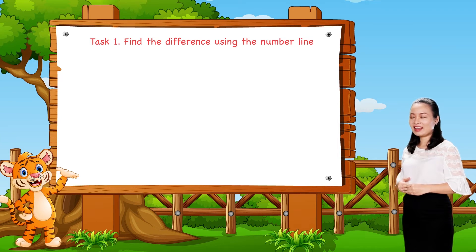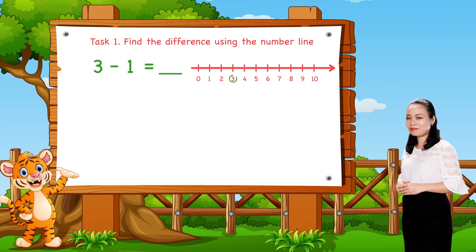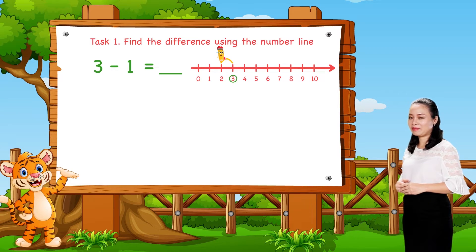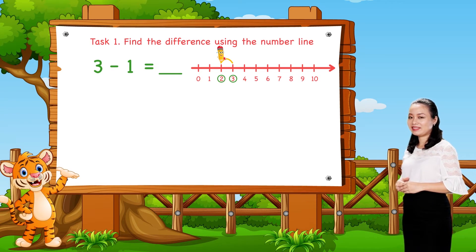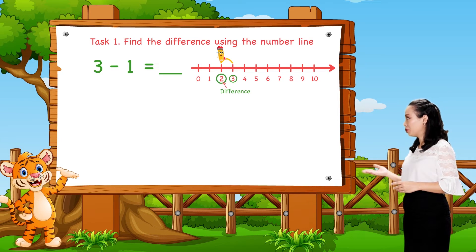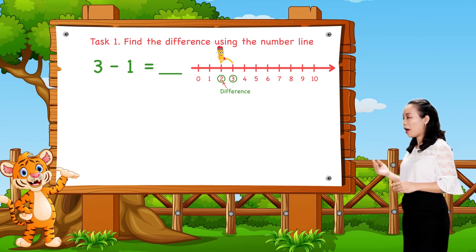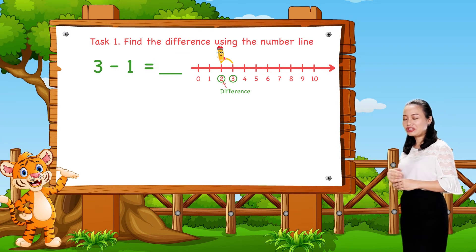First, 3 minus 1. We start from number 3. Then jump one number to the left. Then see the number where we stop. This number is the difference. Here we stop at number 2. So, 3 minus 1 equals 2.